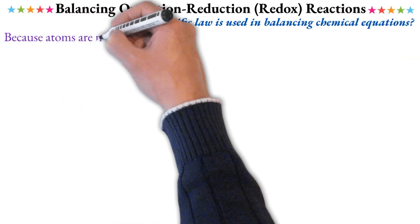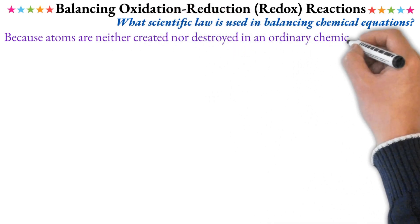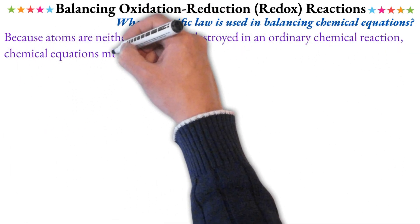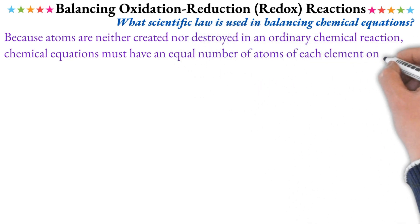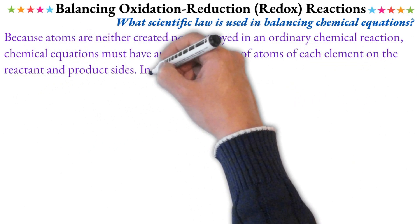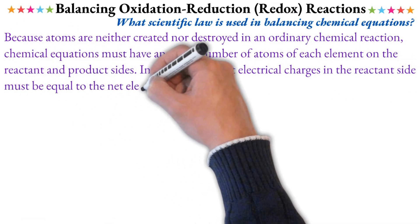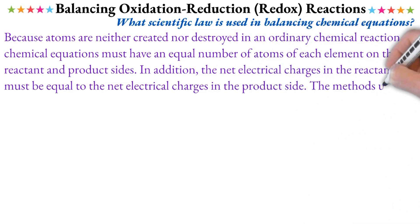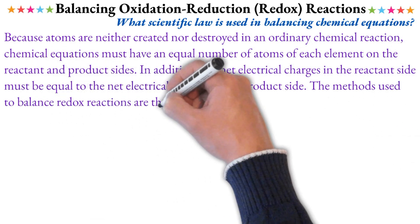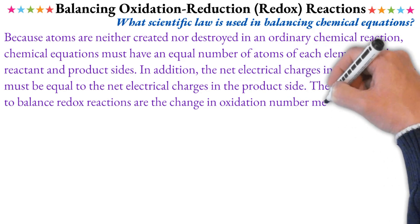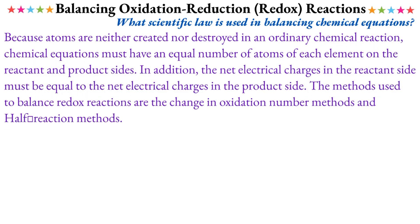Because atoms are neither created nor destroyed in ordinary chemical reactions, chemical reactions follow the law of conservation of mass. The law of conservation of mass states that mass is conserved. If we balance on the product side, we can account for all atoms and mass.